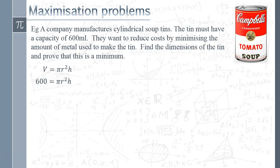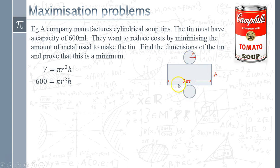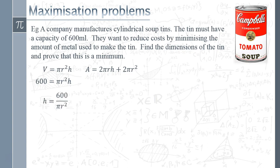The other equation we need is the surface area — that represents the amount of metal used. The formula for the surface area of a cylinder comes from its net: there's the curved surface area, which is a rectangle of dimensions h by 2πr, plus the top and bottom circles each of radius r. So total surface area A = 2πrh + 2πr². We then rearrange the volume equation to get h = 600/(πr²) and substitute that into the surface area formula.